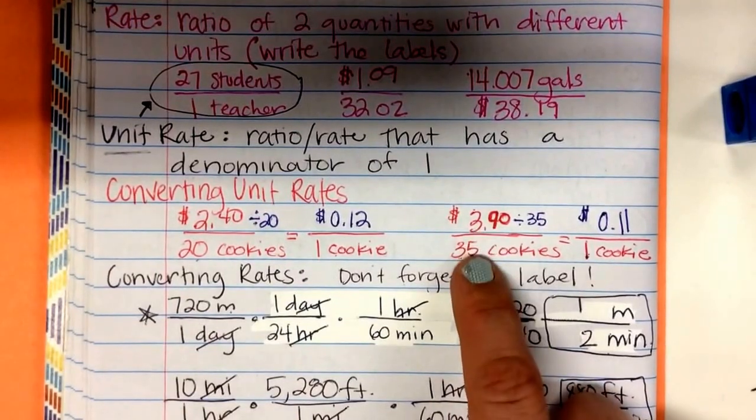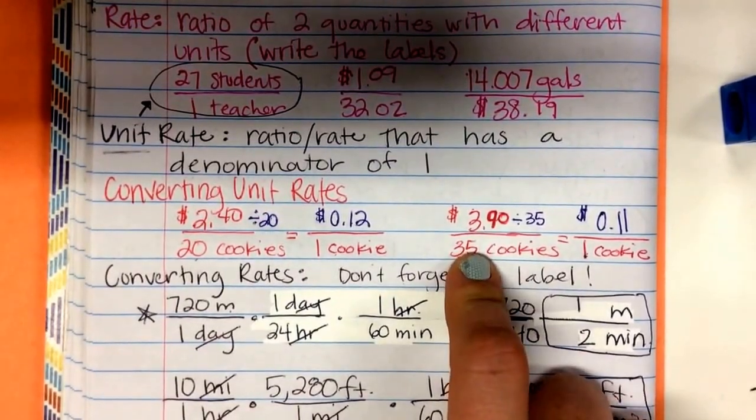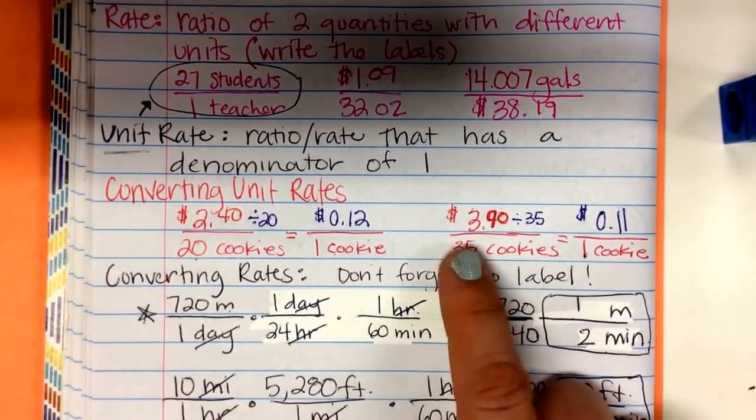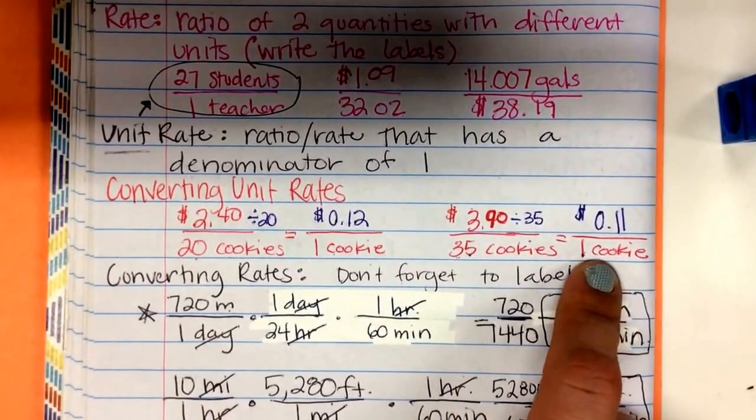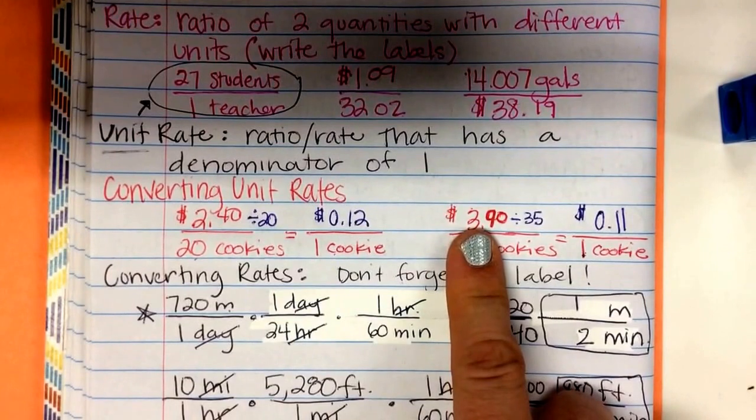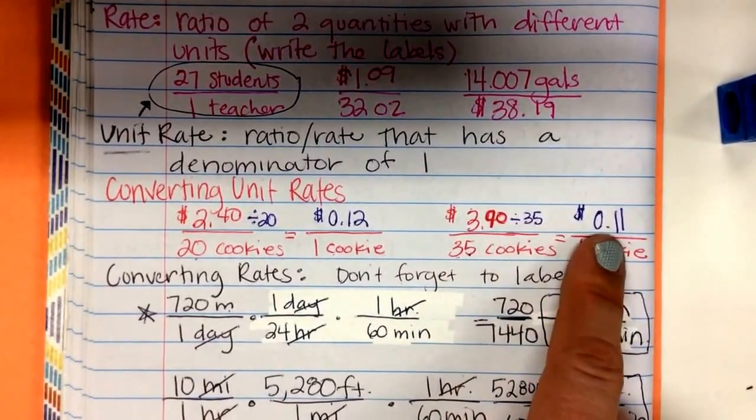$3.90 for 35 cookies divide by 35. 35 divided by 35 is 1 cookie. $3.90 divided by 35 is 11 cookies.